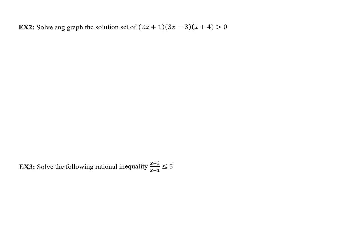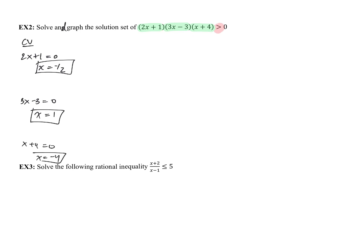Now let's solve and graph the solution set of (2x plus 1)(3x minus 3)(x plus 4) greater than 0. Whenever we see an inequality with multiple variable factors being multiplied together, we need testing and graphing. Finding critical values: 2x plus 1 equals 0 gives x equals negative one half; 3x minus 3 equals 0 gives x equals 1; and x plus 4 equals 0 gives x equals negative 4.